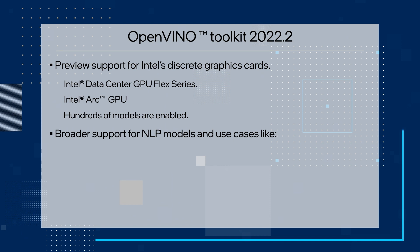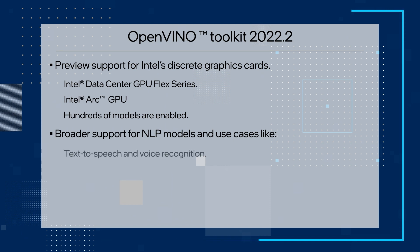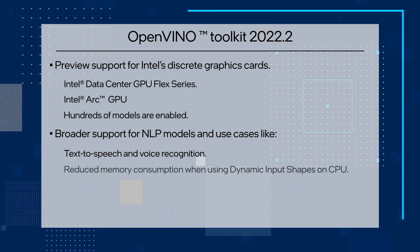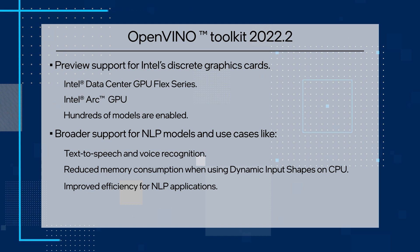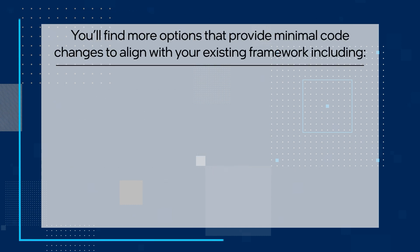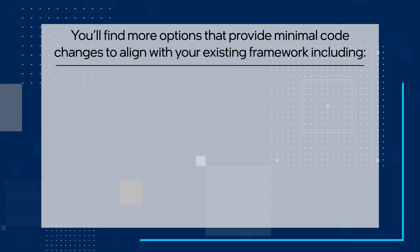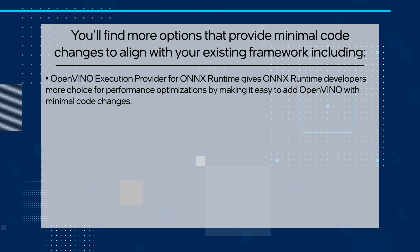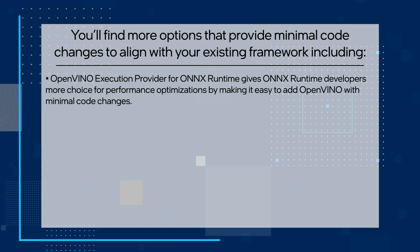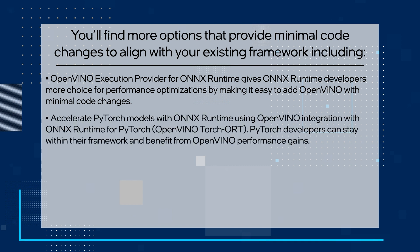We have broader support for NLP models and use cases like text-to-speech and voice recognition, reduced memory consumption when using dynamic input shapes on CPU, and improved efficiency for NLP applications. In frameworks and integrations, you'll find more options that provide minimal code changes to align with your existing framework. This includes OpenVINO Execution Provider for ONNX Runtime, which gives ONNX Runtime developers more choice for performance optimizations by making it easy to add OpenVINO with minimal code changes.